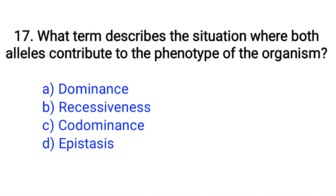Question number 17. What term describes the situation where both alleles contribute to the phenotype of the organism? Option A: Dominance, B: Recessiveness, C: Codominance, D: Epistasis. The right answer is Option C: Codominance.